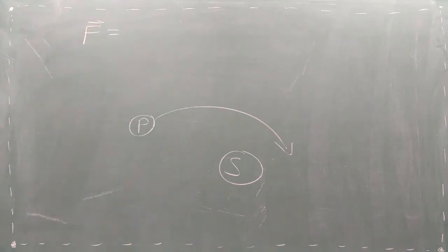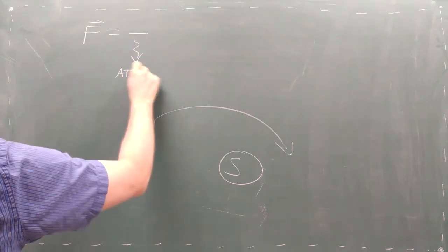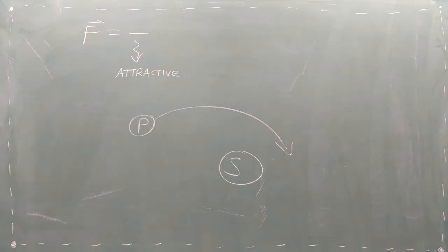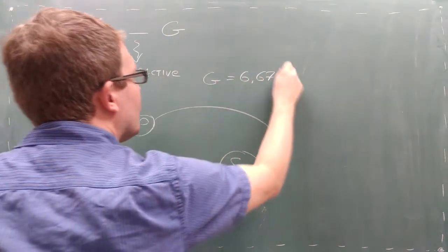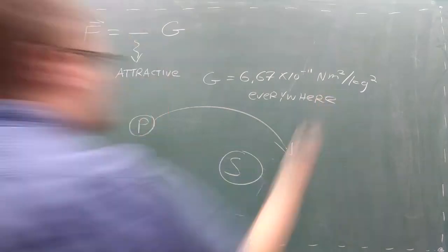First, there's the negative sign out in front. This negative means that the gravitational force is always attractive. Second, there's the universal gravitation constant. This number is always the same value, no matter where you are in the universe.